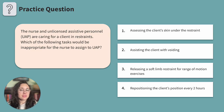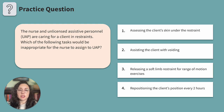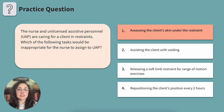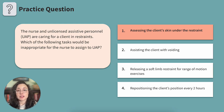Let's test your knowledge with a question. A nurse and an unlicensed assistive personnel (UAP) are caring for a client in restraints. Which task would be inappropriate to assign to the UAP? Option 1: assessing the client's skin under the restraint. Option 2: assisting the client with voiding. Option 3: releasing a soft limb restraint for range of motion exercises. Option 4: repositioning the client every two hours. The answer is Option 1 — delegating a skin assessment to a UAP is inappropriate. While a UAP can report a change in skin condition, they cannot formally assess the skin. Assisting with voiding, range of motion exercises, and repositioning all fall within the UAP's scope of practice.